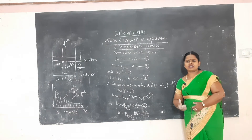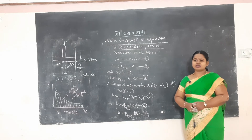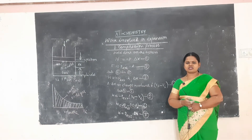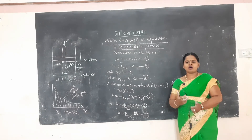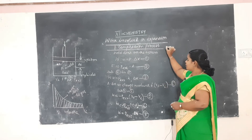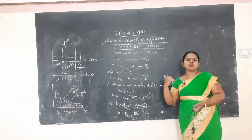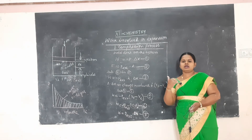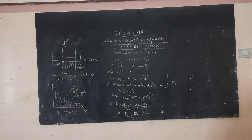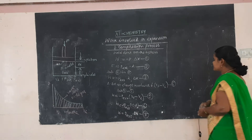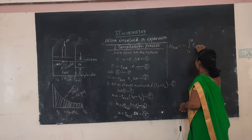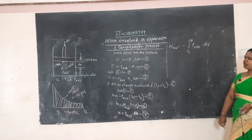If there are infinitesimal changes in pressure, there will be a small compression or expansion and a small decrease in volume. For a reversible condition, we write: W_reversible = -P_ext × dV. Therefore, W_reversible = -∫(V_i to V_f) P_ext dV.